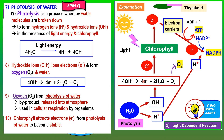So that's the light-dependent reactions. The products are ATP and NADPH — very important products used in the light-independent reactions — and also O₂ (oxygen), which is used in cellular respiration but not in photosynthesis.